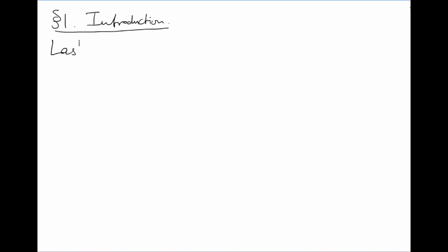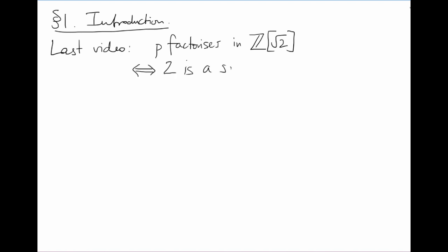Introduction. Last video, we asked whether or not a rational prime p factorised further inside Z adjoin root 2. This turned out to be equivalent to asking whether or not 2 was a square mod p. But calculating all the squares mod p is time-consuming if p is large, or if we need to do this for lots of primes p.